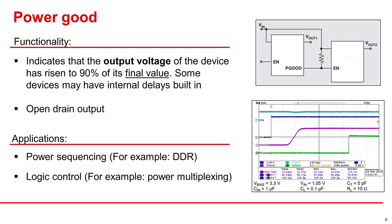Power good, or the PG pin, of some of our devices allows you to power sequence easier and allow logic control because the pin indicates when the output voltage has risen to 90% of its final value, and in some cases, well after it has reached 90%.